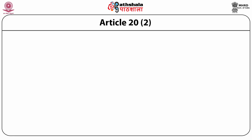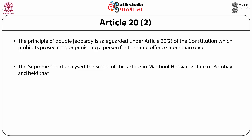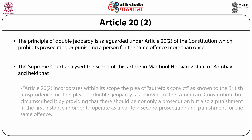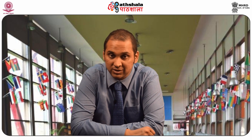Now we come to Article 20 Clause 2, the principle of double jeopardy. The principle of double jeopardy is safeguarded under Article 20 Clause 2 of the constitution, which prohibits prosecuting or punishing a person for the same offence more than once. Let's look at the Supreme Court's analysis in Maqbool Hussain v. State of Bombay: 'Article 20 Clause 2 incorporates within its scope the plea of autrefois acquit as known to British jurisprudence or the plea of double jeopardy as known to the American constitution, but circumscribed it by providing that there should be not only a prosecution but also a punishment in the first instance in order to operate as a bar to a second prosecution and punishment for the same offence.'